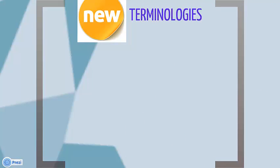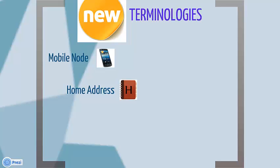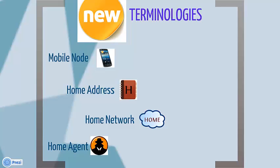Some introductions must be done first. Meet the mobile node, which is the device that moves from the home network to the foreign network. The home address is the permanent address of the mobile node — it is also the address of the mobile node in its original network. The home network is its original network that the mobile node was associated with before moving to a new network. The home agent is the node in the home network responsible for forwarding messages to the mobile node when it is outside the home network.